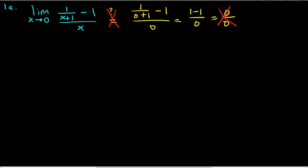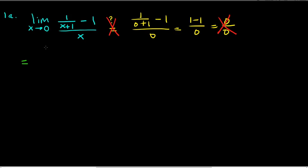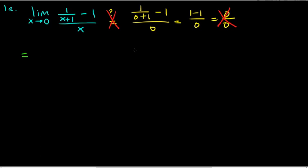When you're finding a limit, that's the first thing you should always try. So what should we do instead? The directions say to find the following limits, so you could do it any way — draw a graph, plug in numbers close to 0 numerically — but in most cases it says to do it algebraically. So we have the limit as x goes to 0 of (1/(x+1) - 1) all over x.